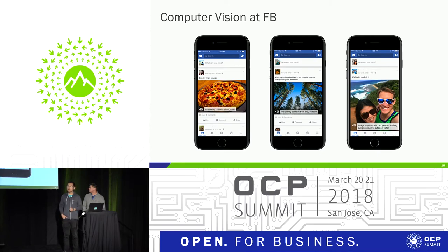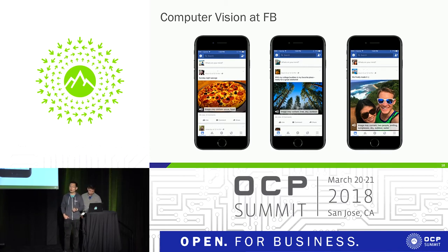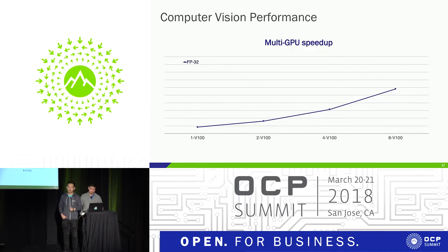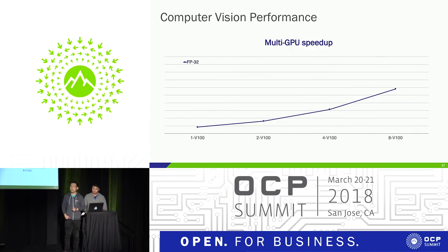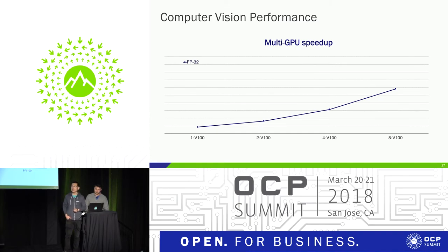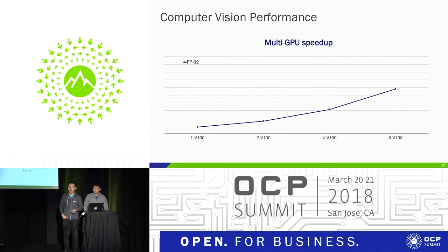Such computer vision technology requires a large amount of compute power for training. With the Big Basin Volta platform, for a single GPU training job, we can achieve 66% performance improvement compared with the previous generation Big Basin Pascal.